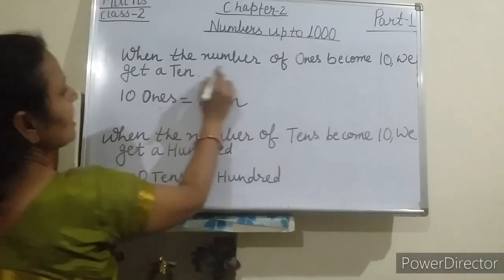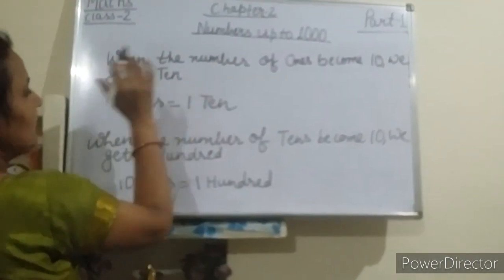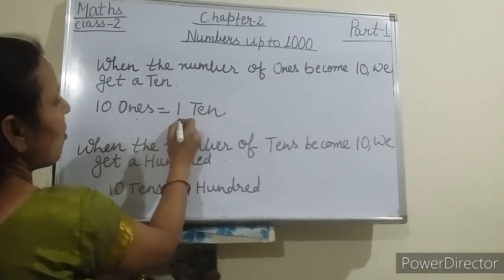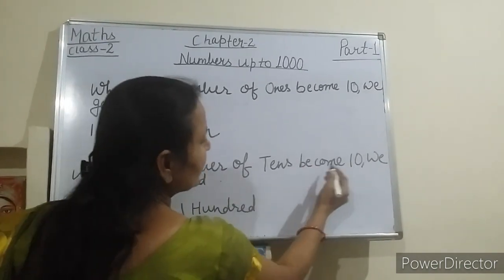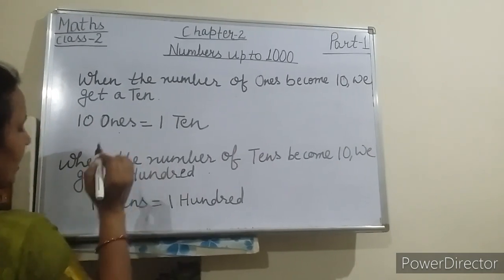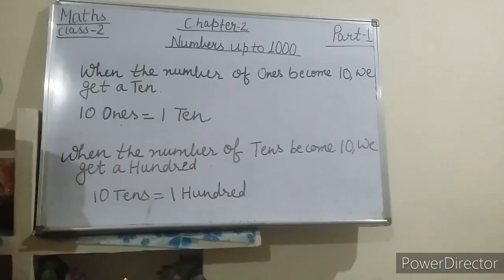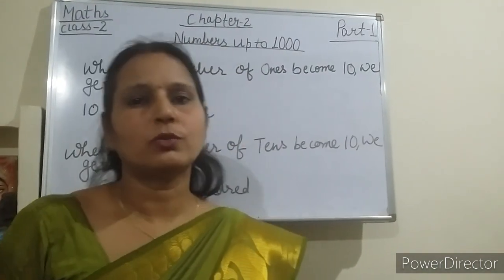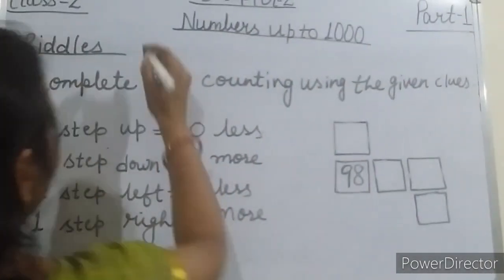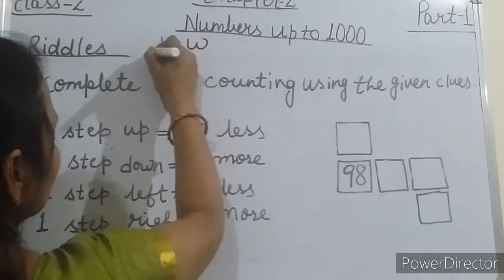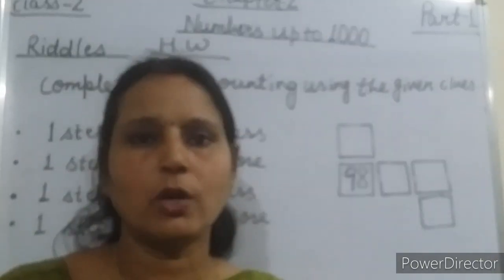So students, when the number of ones becomes 10, we get a ten — 10 ones equals 1 ten. And when the number of tens becomes 10, we get a hundred — 10 tens equals 100. I am giving you a riddle to solve as your homework. You have to complete it and learn whatever I taught you today. This is your homework.